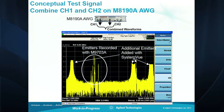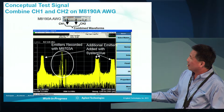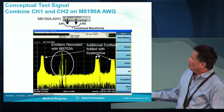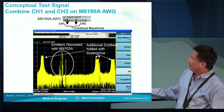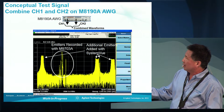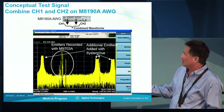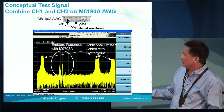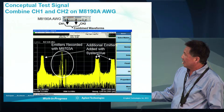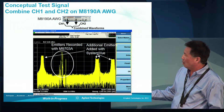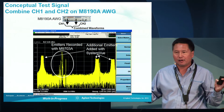By combining channel one and channel two with a power combiner, we can create a composite spectrum comprised of the emitters that were recorded with the digitizer as well as the emitters that were simulated in SystemVue. This is the composite spectrum centered at 2.5 GHz over a 3 GHz span — a very wideband spectral view.